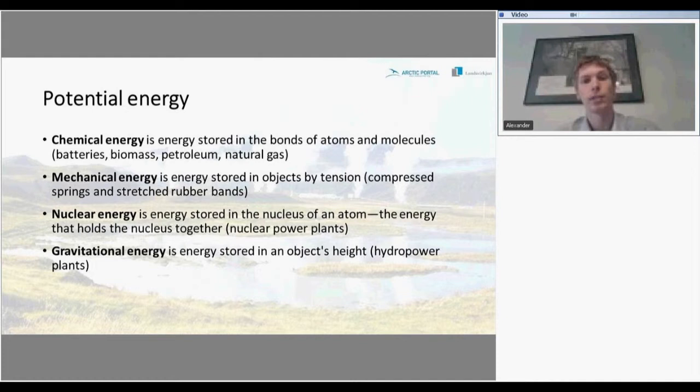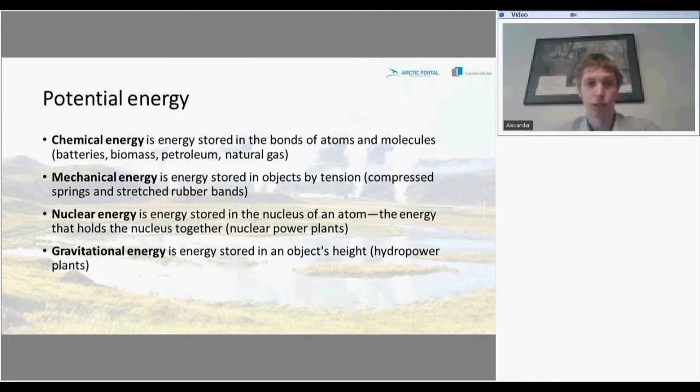Nuclear energy is energy stored in the nucleus of an atom — the energy that holds the nucleus together. For example, we use that in nuclear power plants. And the last type of potential energy is gravitational energy, which is energy stored in an object's height. An example of its usage is hydropower plants.